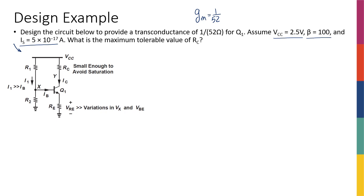Before getting started, just a reminder: we want the current I1 through R1 and R2 to be much bigger than IB so we can neglect IB and make the biasing beta-independent. Also, we want Rc to be small enough to avoid saturation, but not too small — because our gain depends on Rc, so making it too small reduces gain. We'll discuss this more in the next few weeks.